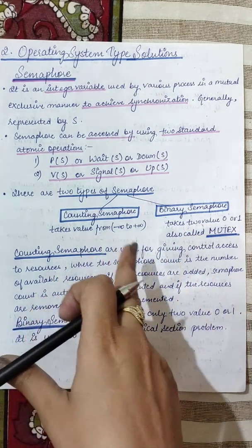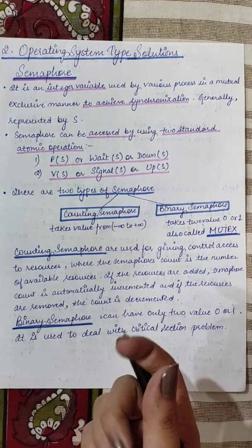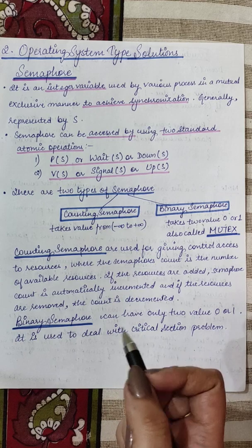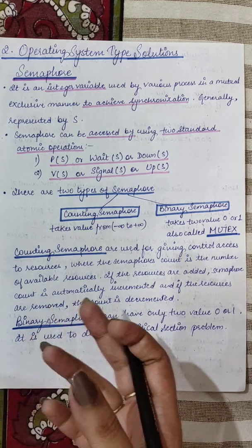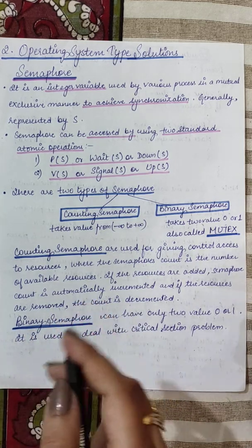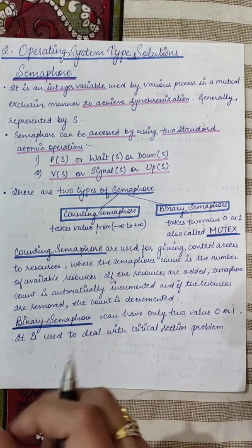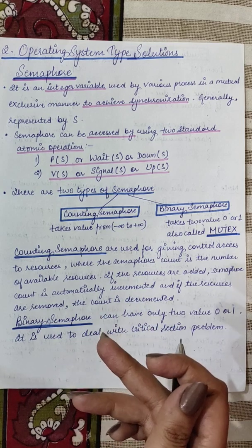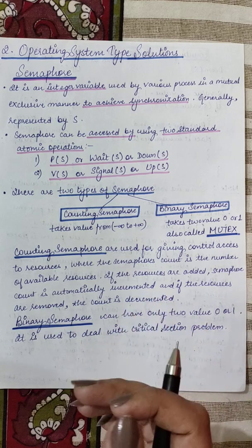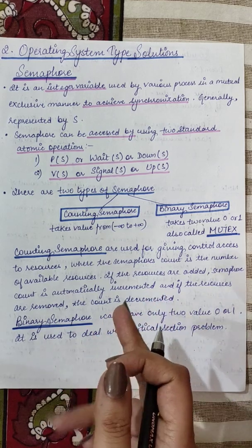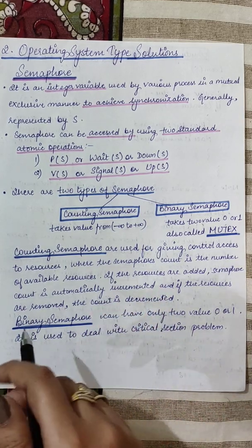Counting semaphores हम तब use करते हैं जब हमें resources के controlled access की बात करनी होती है — there are a limited number of resources और उन्हें share कराना है. जैसे ही resources use होती हैं यानि कि खतम हो रही होती हैं, count को हम decrement करेंगे (down operation). जब resources वापस आ जाती हैं, count को increment करेंगे — यानि कि signal या up operation perform होता है.